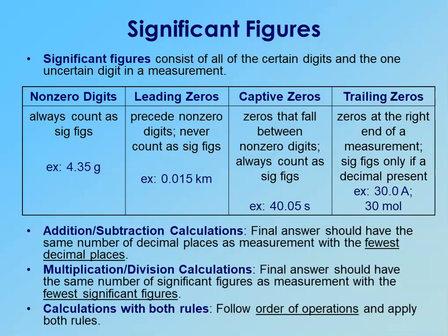When you multiply and divide, you don't line things up by decimal places as you do in adding and subtracting. So we don't look at decimal places with multiplication and division — we look at significant figures. Whichever measurement has the least number of significant figures is what we report our final answer to.